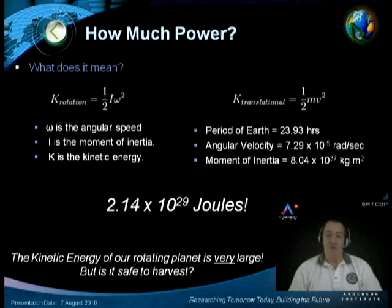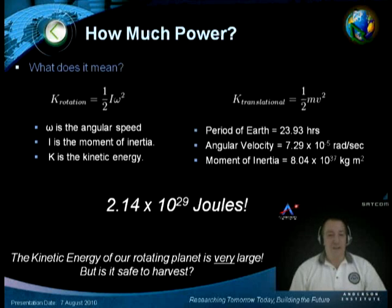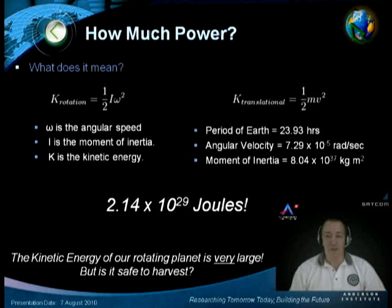The kinetic energy of our rotating planet is very, very large. If we take a look at the formula on the left for kinetic energy, considering the angular speed and moment of inertia, and calculate it on the right, the period of the Earth is roughly about 23.93 hours, with an angular velocity of 7.29 × 10⁻⁵ radians per second, giving us a moment of inertia of about 8.04 × 10³⁷ kilogram meters squared. That's roughly about 2.14 × 10²⁹ joules. This is a massive amount of energy.